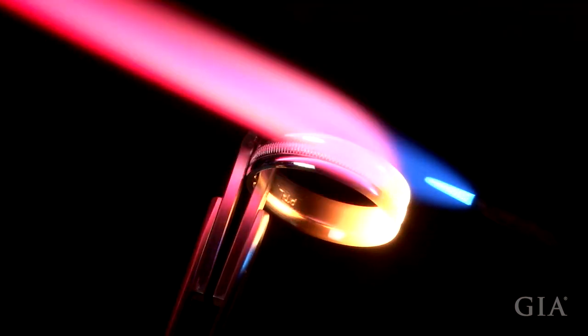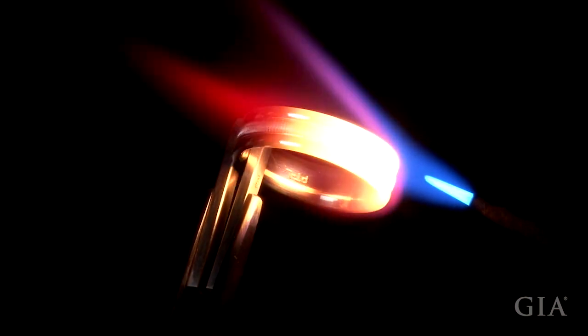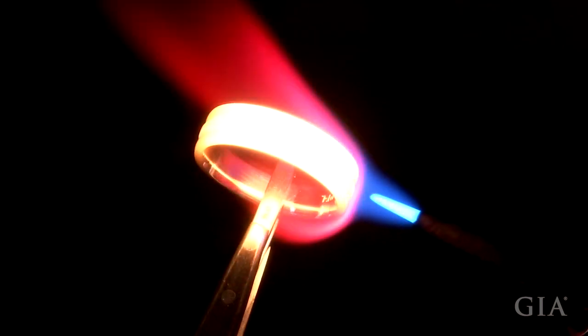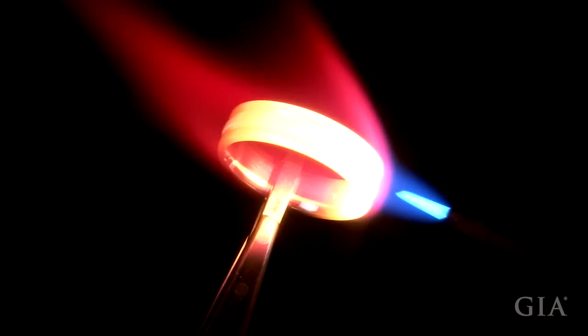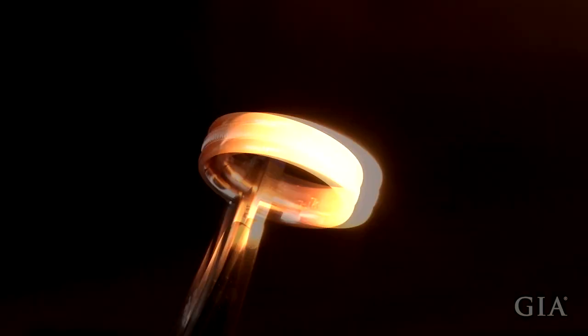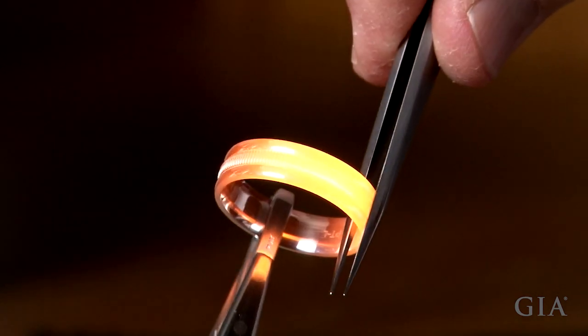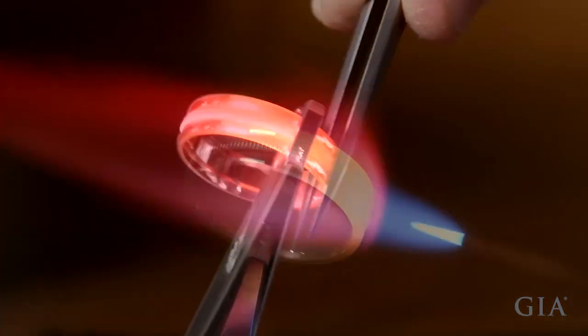Position the torch so the area just beyond the inner cone is close to the ring and rotate the torch around the shape of the ring. Move the tweezers to the other side of the band and continue annealing.